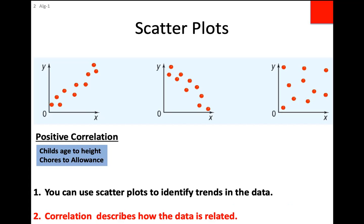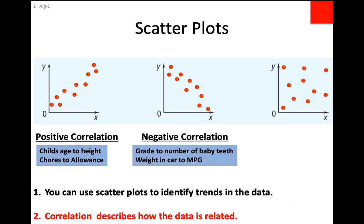If positive correlation means as something increases something else also increases, then negative correlation is when as something increases, something else decreases. For example, the more class periods you have in school the less free time you have at home. Other examples: as your grade level increases, the number of baby teeth decreases. As the weight of a car increases, your miles per gallon typically goes down because it becomes less efficient.